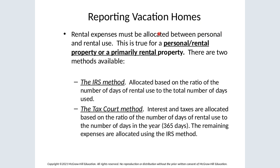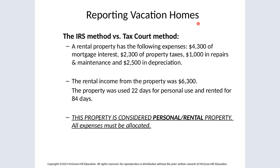When a property is personal-rental or primarily rental, expenses must be allocated based on the number of days rented. There are two methods: the IRS method and the Tax Court method. Under the IRS method, we use the ratio of rental days divided by total days used (personal plus rental) for all expenses, including mortgage interest and property taxes. Under the Tax Court method, everything else uses the same ratio, but mortgage interest and property taxes use rental days divided by 365.